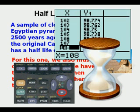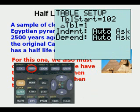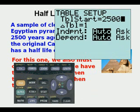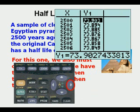But scrolling to 2,500 would take too long, so there's a shortcut. Instead of scrolling, we go to Second, Window, and change Table Start to 2,500. Now we go to Second, Graph, and we see that after 2,500 years there is going to be 73.903% of the original carbon-14 remaining.